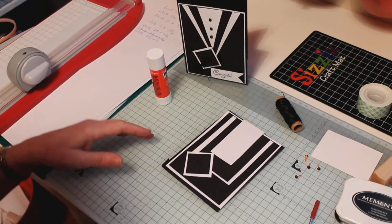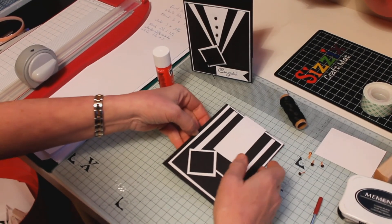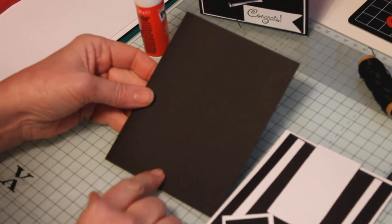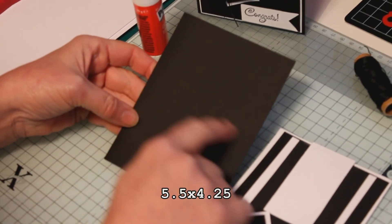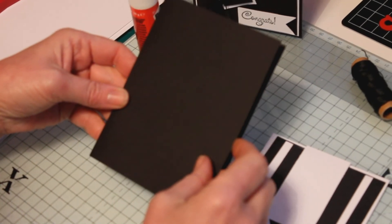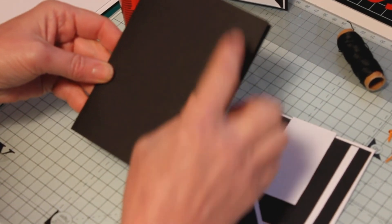So to start off you'll need a card base and this card base measures five and a half by four and a quarter, so that would be eleven inches by four and a quarter and fold it in half when you scored it.